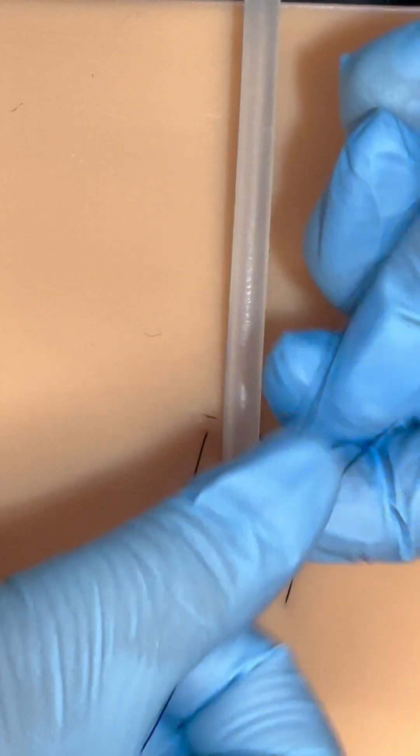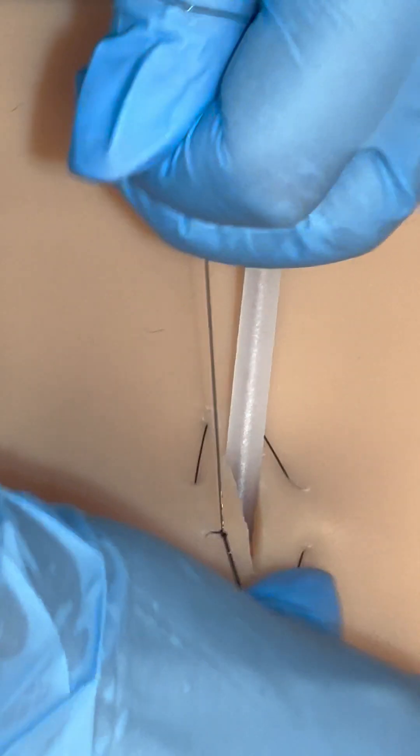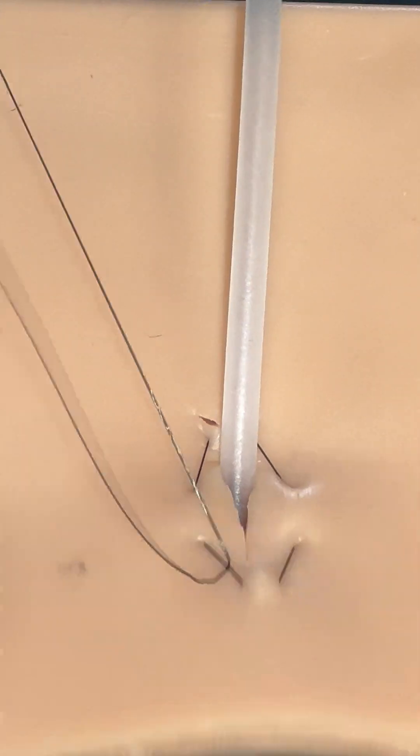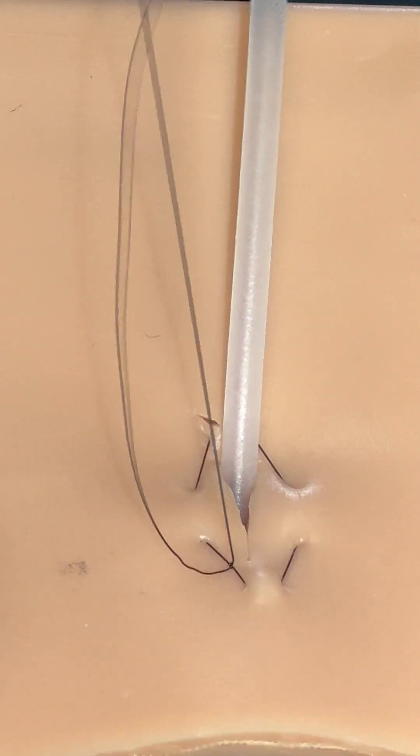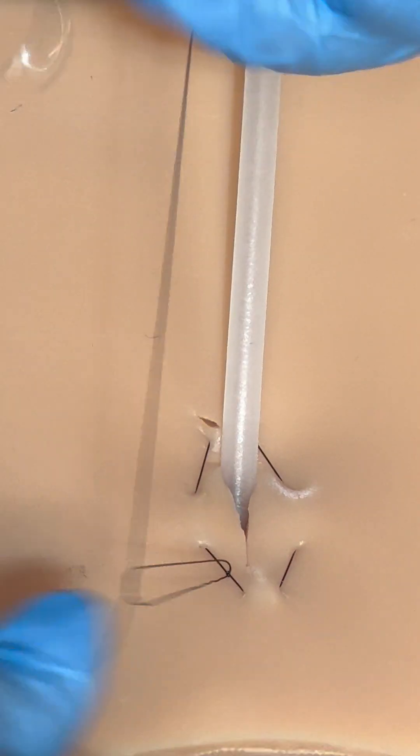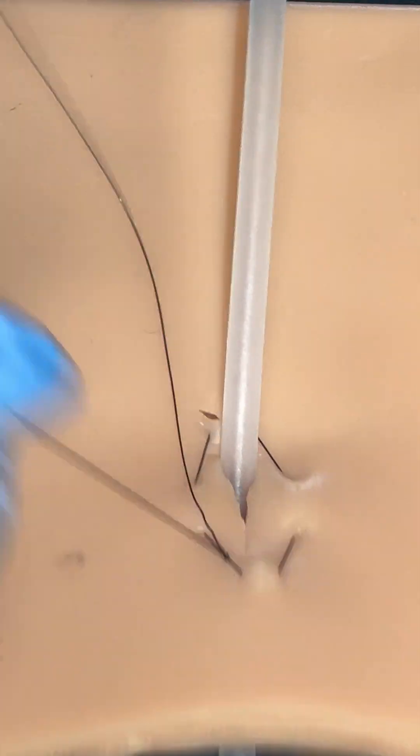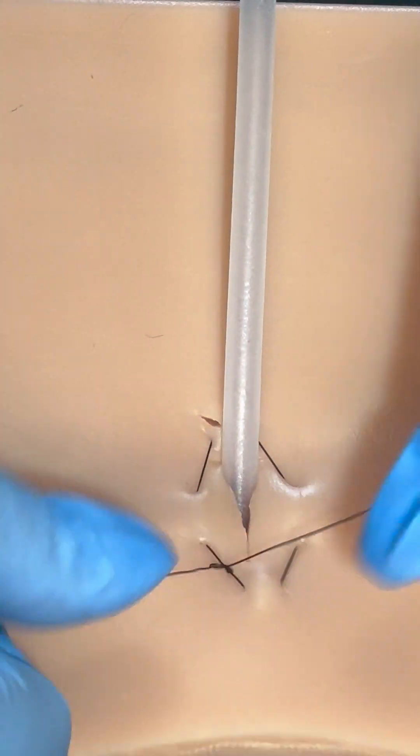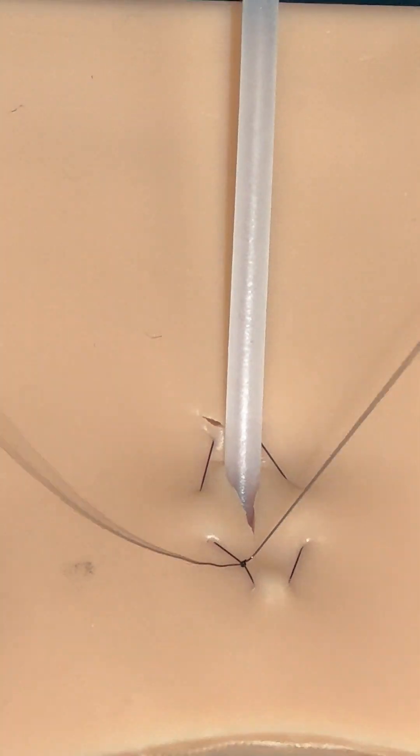I'm going to do a hand tie. I'm going to do a square knot on these two sides together. And I'm going to go ahead and do another square knot.